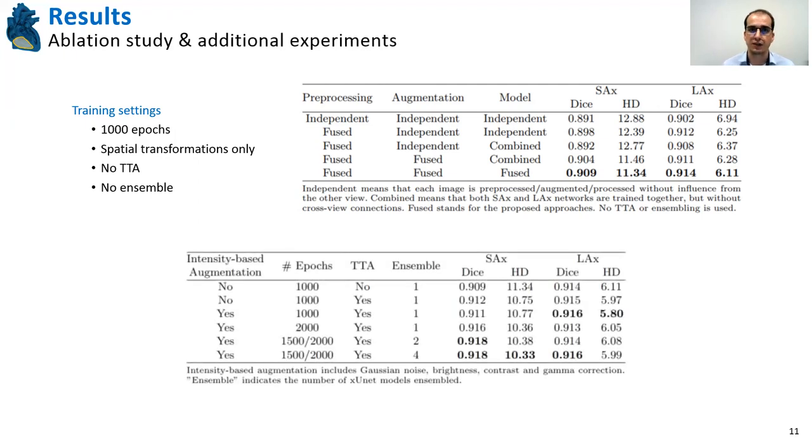Afterwards, I did an additional set of experiments in which I started including intensity-based augmentations, I increased the number of epochs, I used test time augmentation and used ensemble modeling, and all of them also led to improvements on the results. And the final and better results was obtained with all of these techniques combined with an ensemble of four XUnet models.